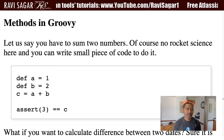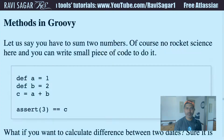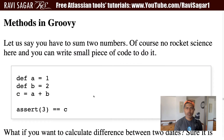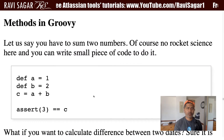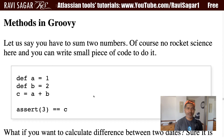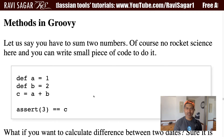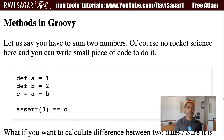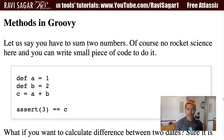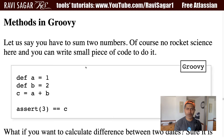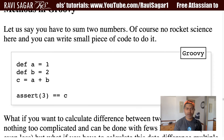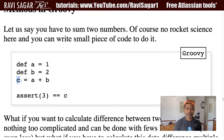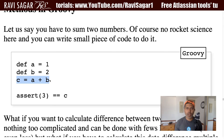Hello everyone. In this video, let us discuss the methods in Groovy. Methods are really important in Groovy, so let me explain in a brief and short way. Let us say you have to add two numbers. You can write a simple piece of code for adding two numbers — it is not really rocket science. You can declare your first number in a variable, declare your second variable, and then perform your calculation. Very simple and nothing complicated.